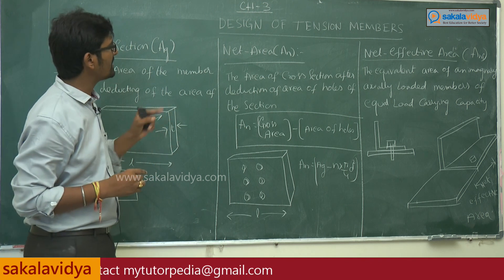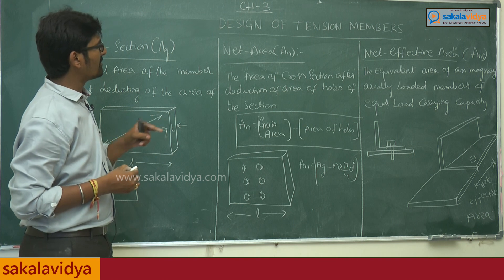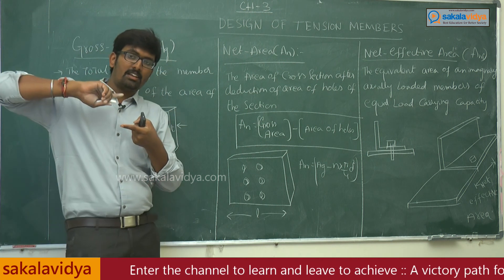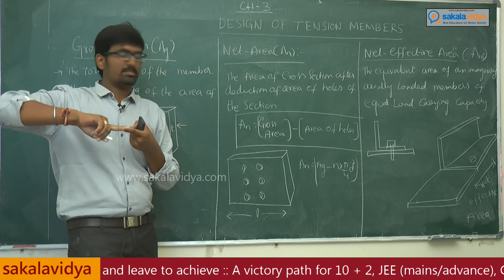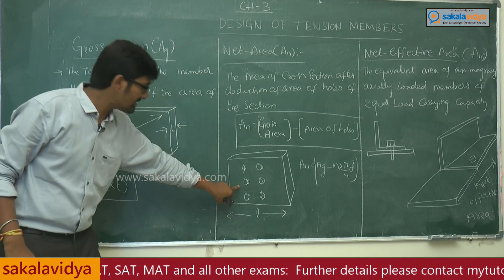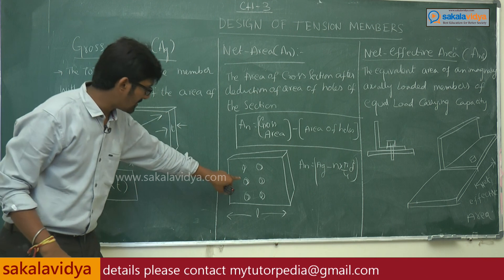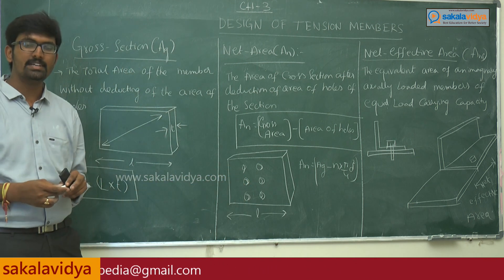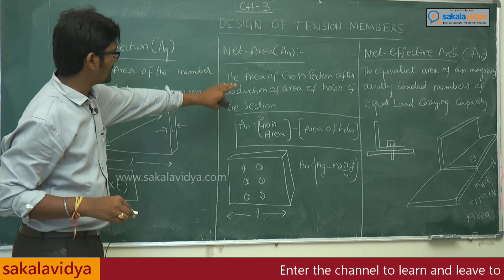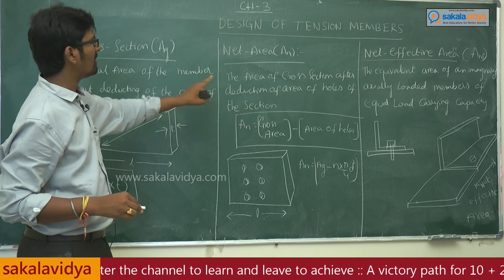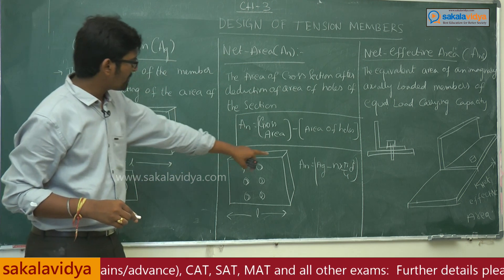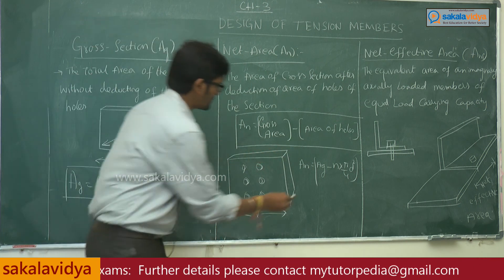The net area section is the area of a cross-section after deduction of the area of holes. In order to join two structural elements, we need to deduct the holes. For example, if we deduct 6 holes, that is 6 × (π/4 × d²). So the net area = gross area (L × T) minus n × π/4 × d², where n refers to the number of holes.